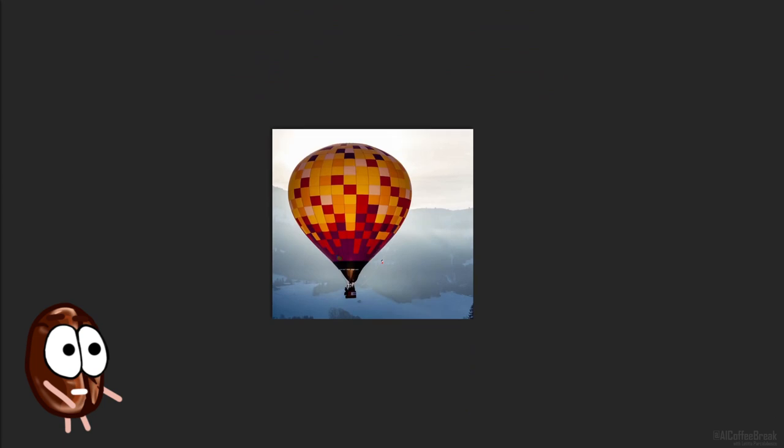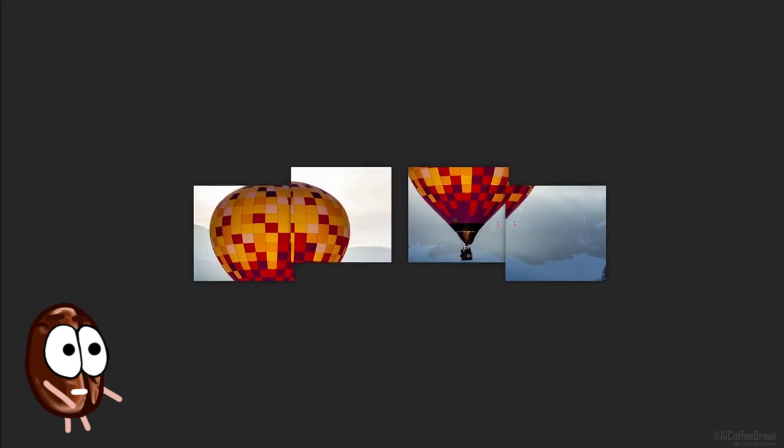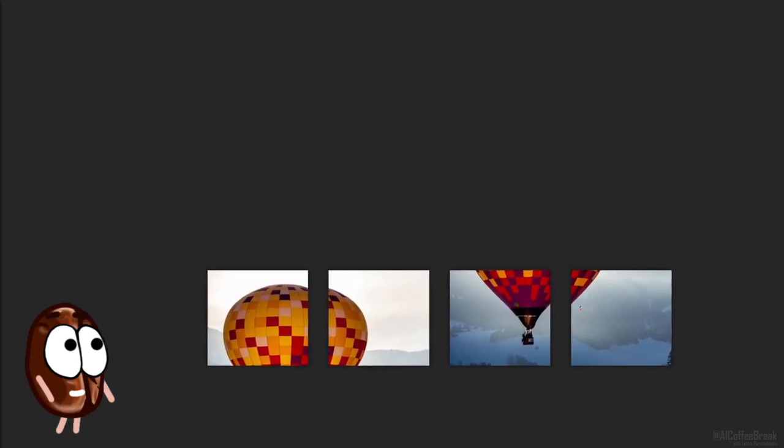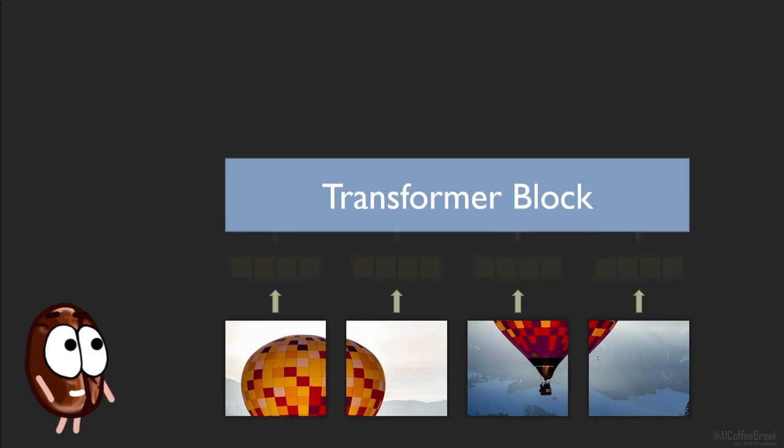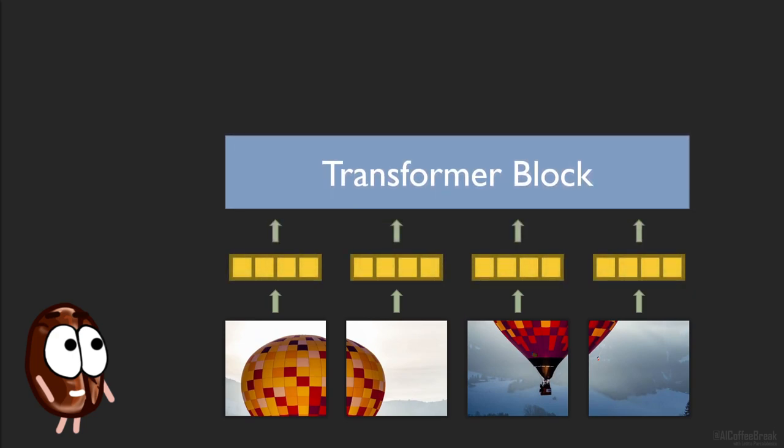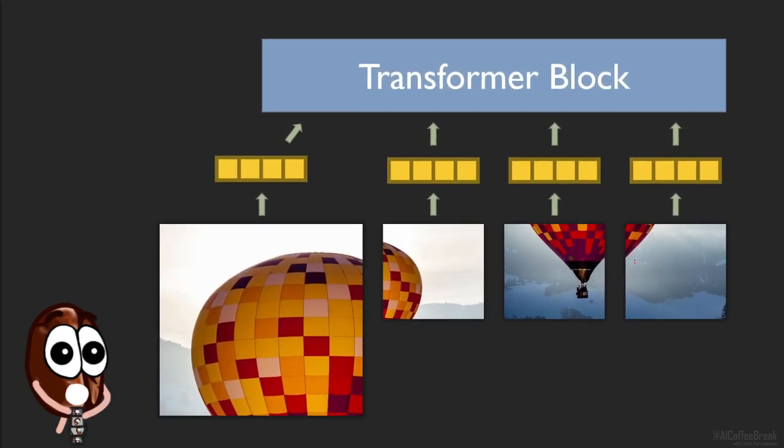Well, vision transformers so far have been splitting the image into a sequence of patches, but transformers need vectors, not 2D patches. Therefore, the patches are transformed into an image vector by a linear projection, for example. But here, in the transformation from a 2D patch to a vector, the internal pixel structure of the patch is lost.